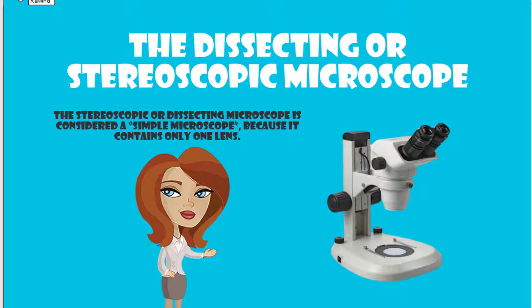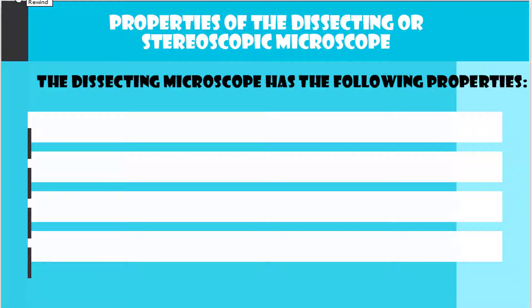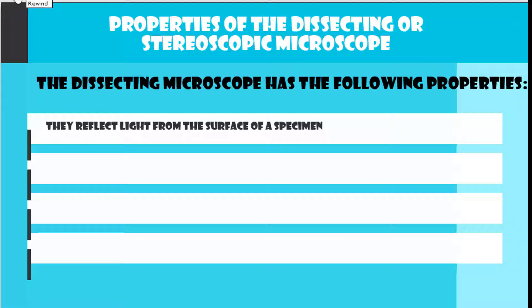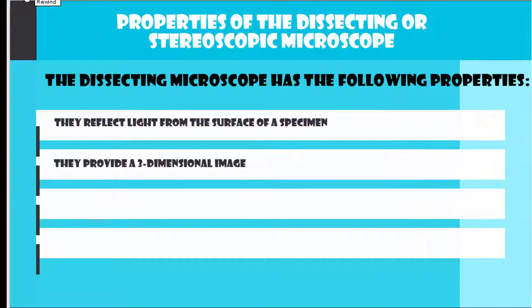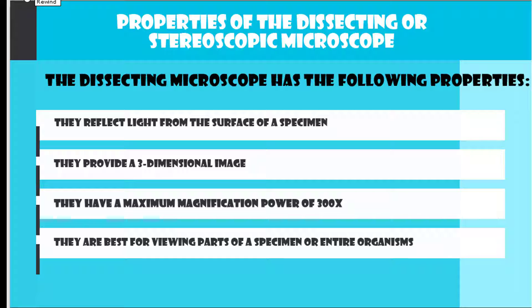The stereoscopic or dissecting microscope is considered a simple microscope because it contains only one lens. The properties of the dissecting or stereoscopic microscope are: they reflect light from the surface of a specimen, they provide a three-dimensional image, they have a maximum magnification power of 300x, and they are best for viewing parts of a specimen or entire organisms.